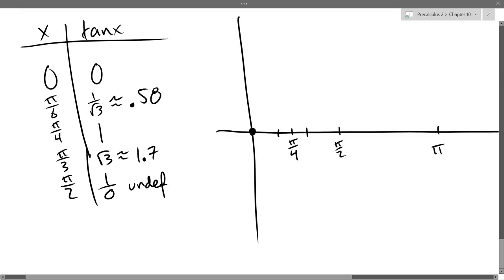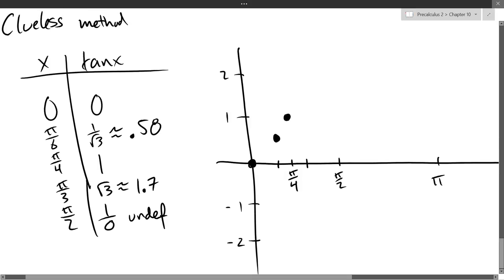So for the first point, 0, 0. Easy, that's the origin. Pi over 6, 0.58. So I better decide where 1 is. I'll try to go about a third that far. I'll say 1, minus 1, and I'll mark off 2 also and minus 2. So pi over 6, we have a little bit more than a half, so we'll go right about there. Pi over 4, we have exactly 1. Pi over 3, 1.7, getting pretty close to 2, about there. And then, of course, our vertical asymptote. I'll draw in blue.